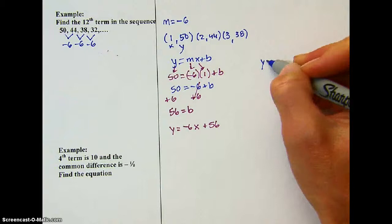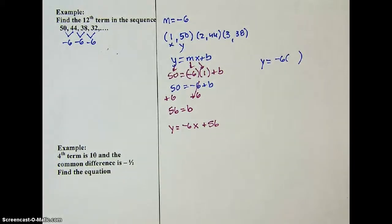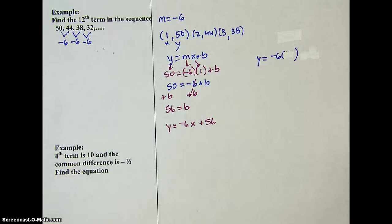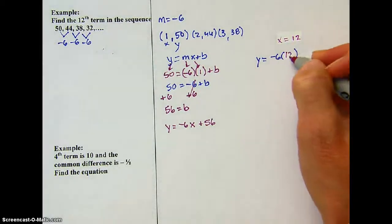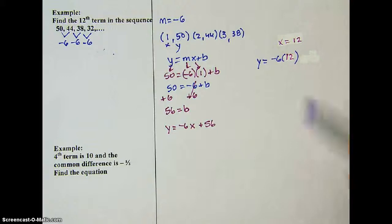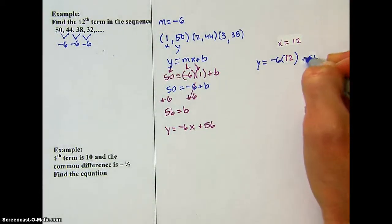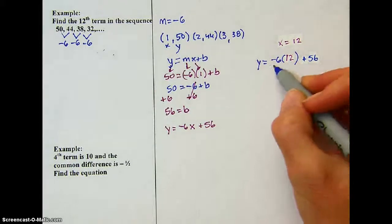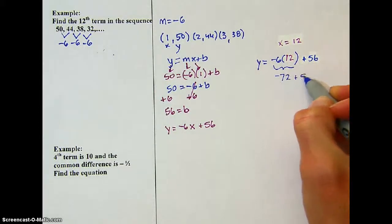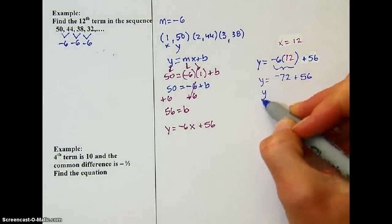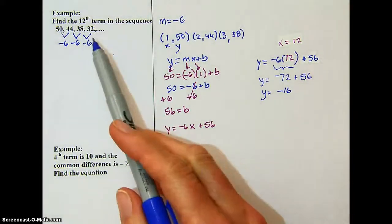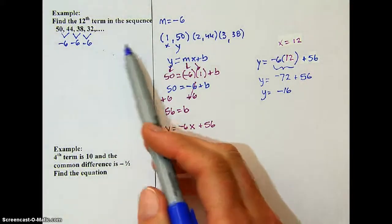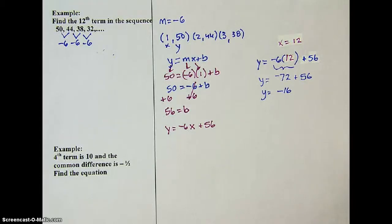Now I want to find the 12th term. I could continue to subtract 6 until I got to the 12th, but now I can just use this equation. Substituting x = 12: y = -6(12) + 56 = -72 + 56 = -16. So the 12th term is -16. That makes sense because we're getting smaller every time, and eventually we get into the negatives — by the 12th term we're at -16.